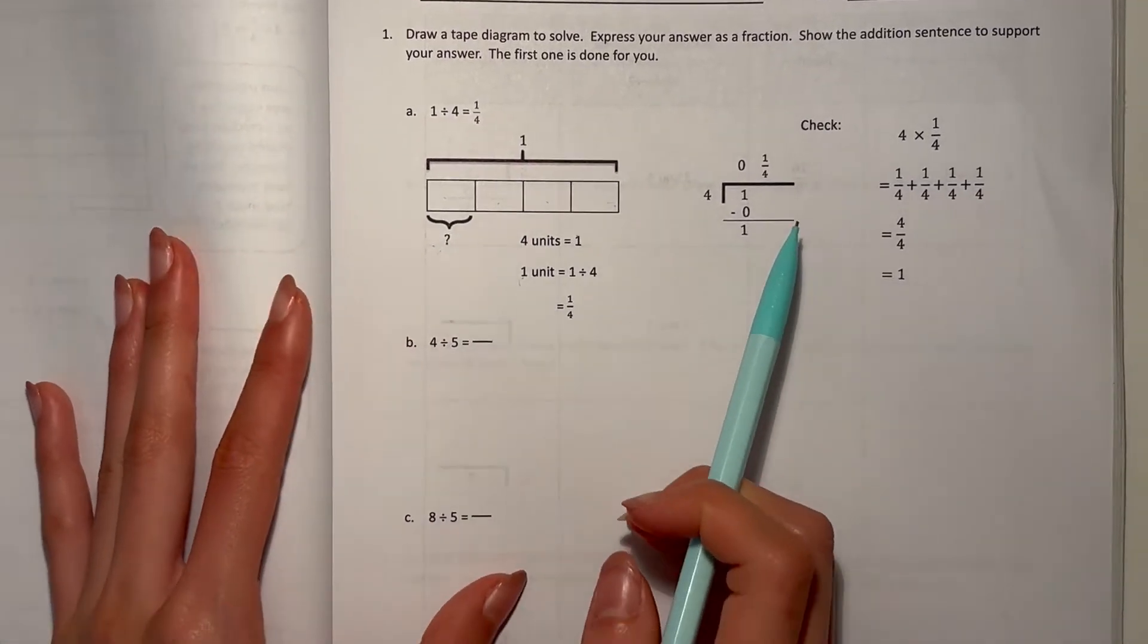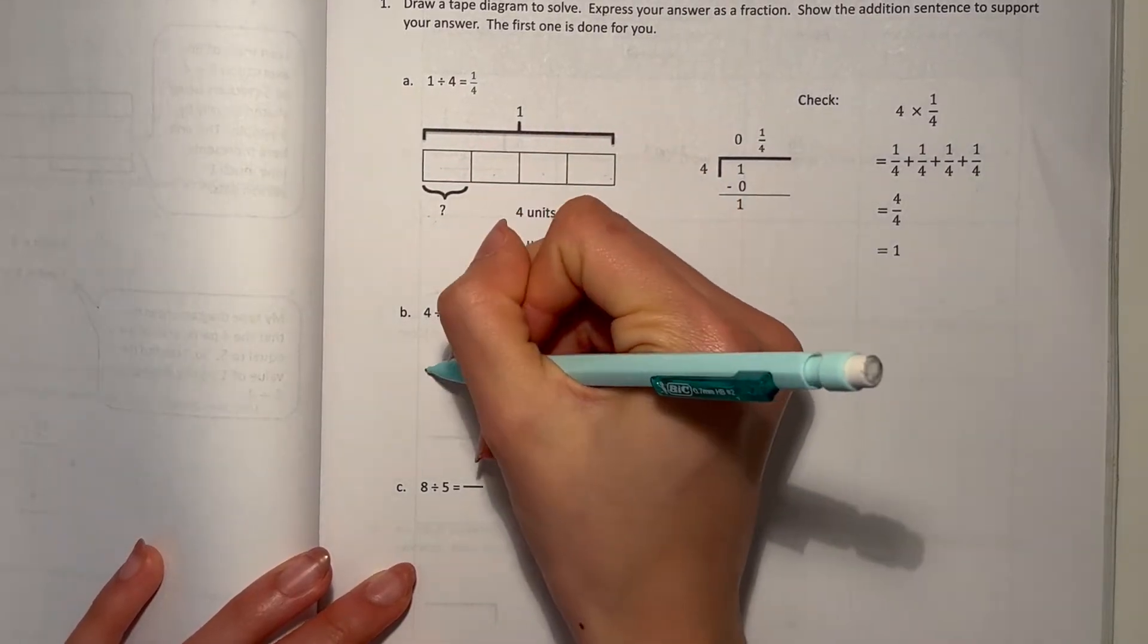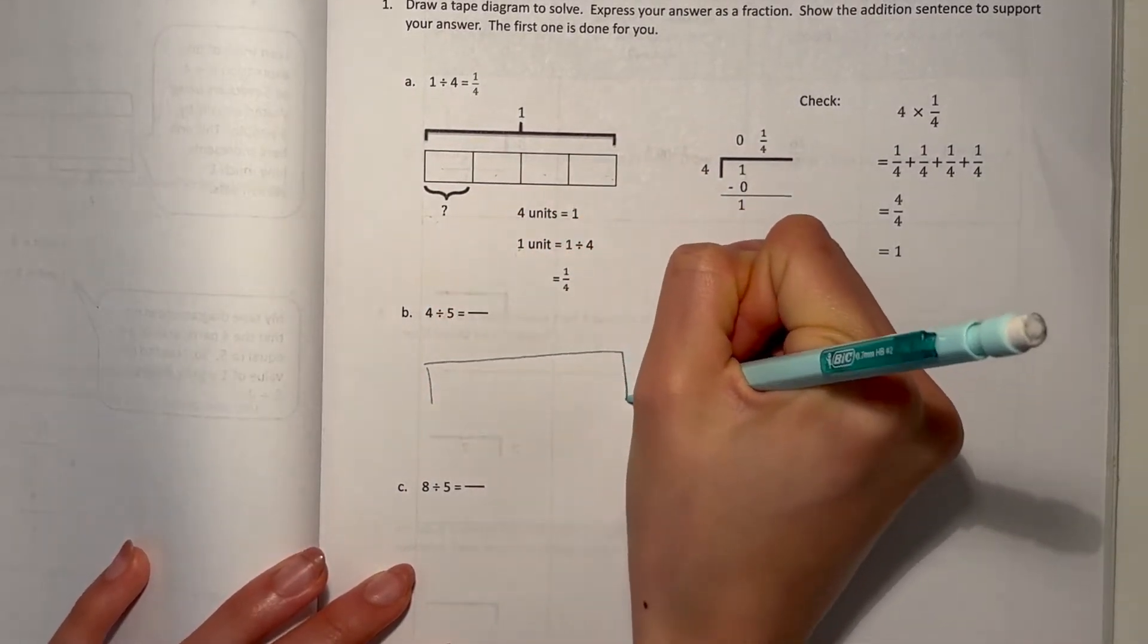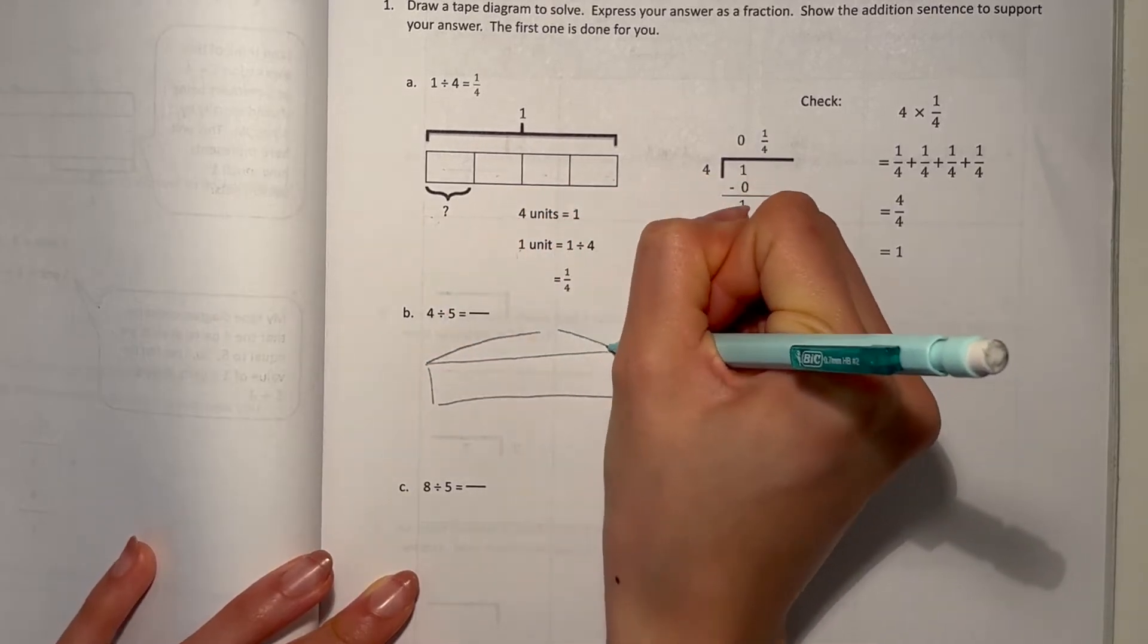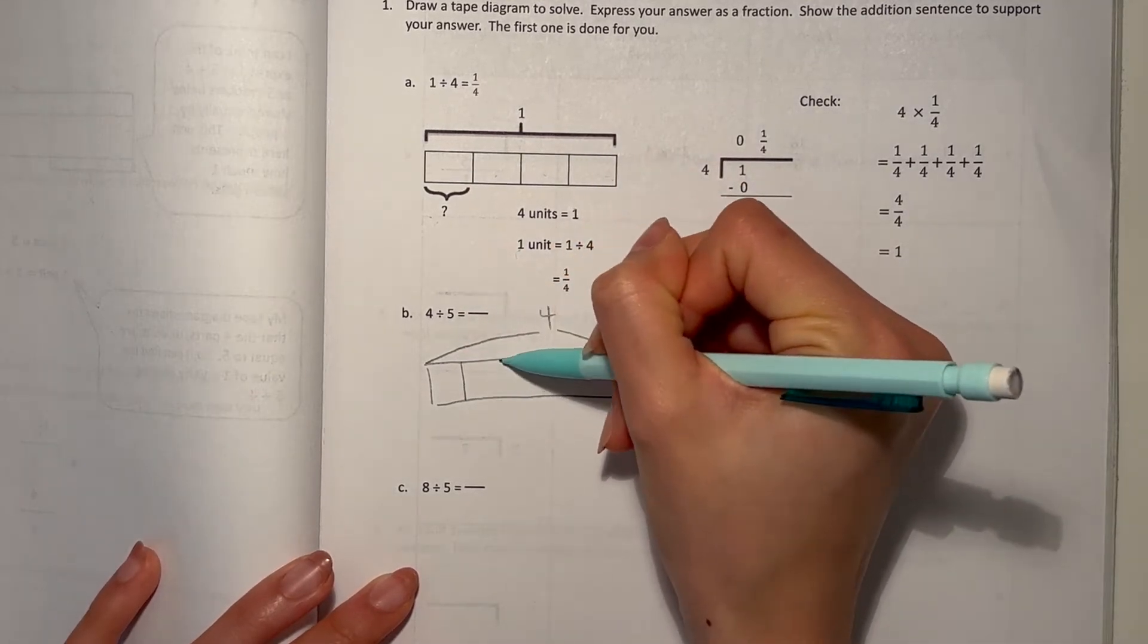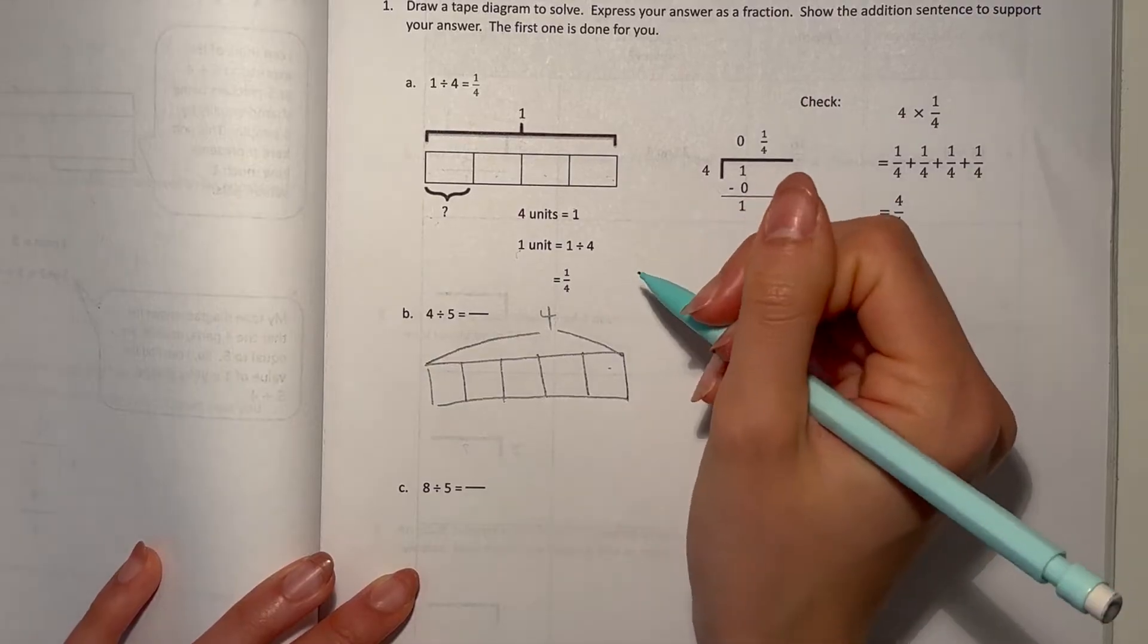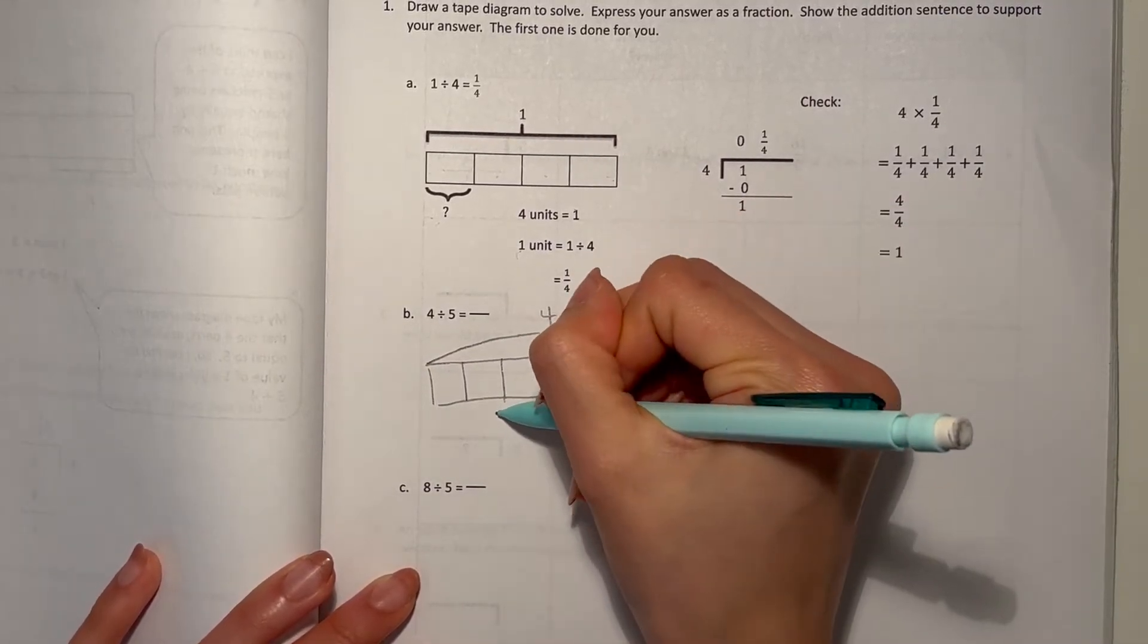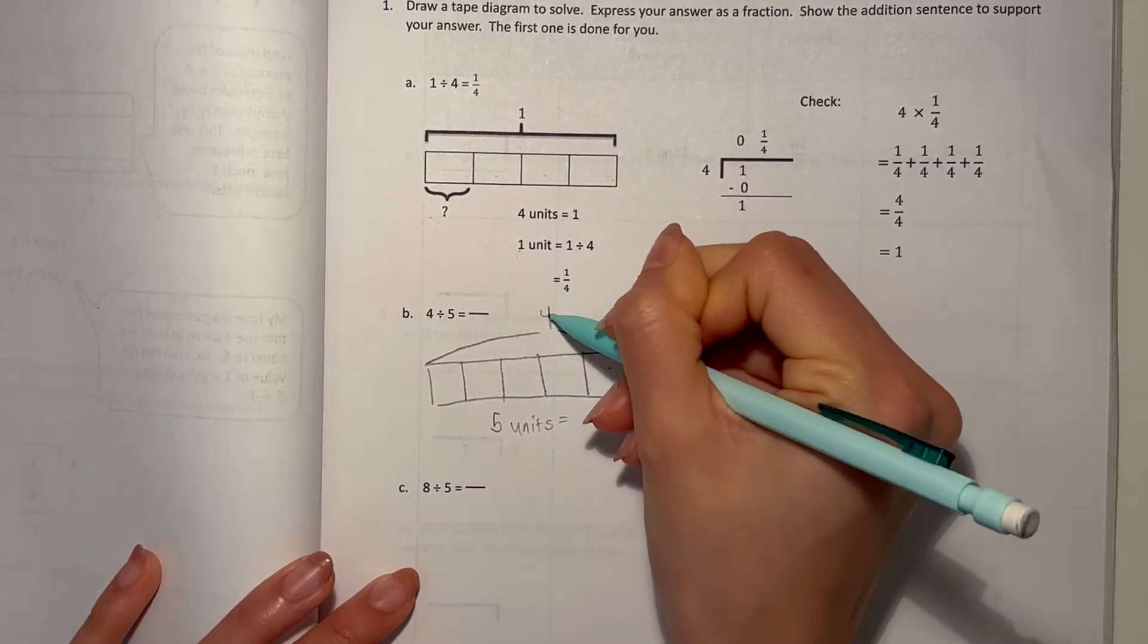So B, 4 divided by 5. So our whole here would be 4. And we're dividing by 5. So 1, 2, 3, 4, 5.